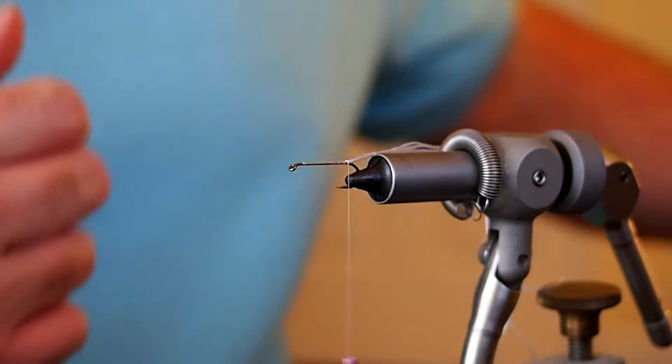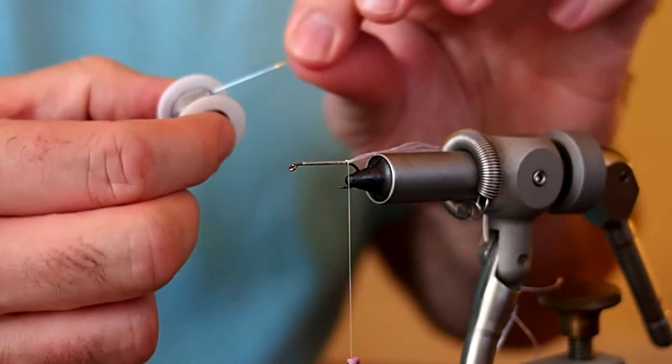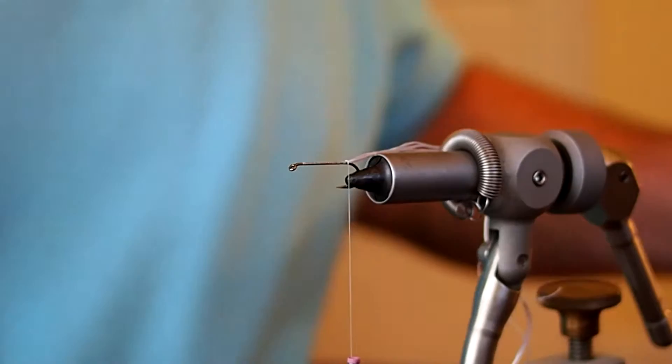For the ribbing I'm going to be using some silver tinsel. So I'm just going to cut off 6 to 8 inches of that and go ahead and tie that in.